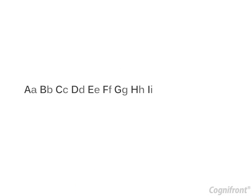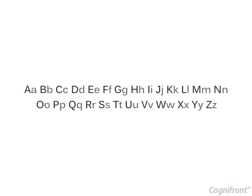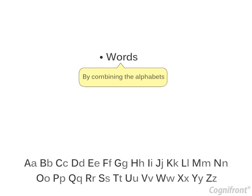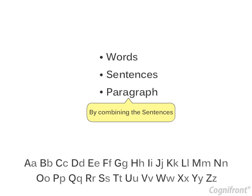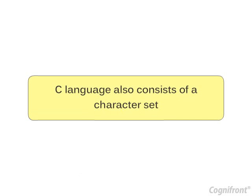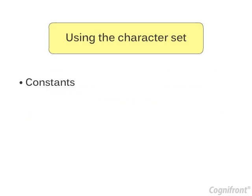All of us know that every language consists of alphabets or characters. And by combining the alphabets, we can form words which in turn are combined to form sentences, and sentences are combined to form paragraphs. In the same way, C language also consists of a character set.